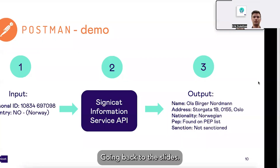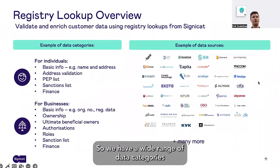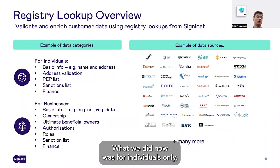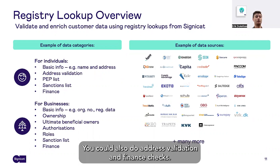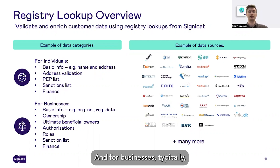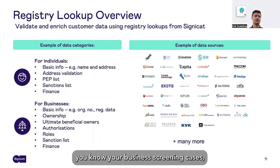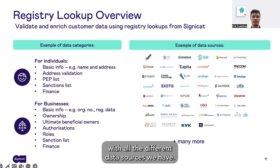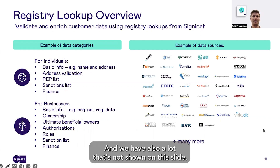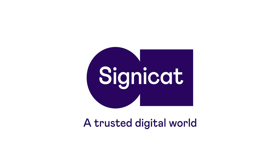Going back to the slides: we have a wide range of data categories where you can do different kinds of lookups. What we did just now was for individuals — basic info and PEP and sanction list checks. You can also do address validation and finance checks. For businesses, in typical know-your-business screening cases, you can perform a wide variety of business checks across many different markets, as shown by the many data sources we have available.